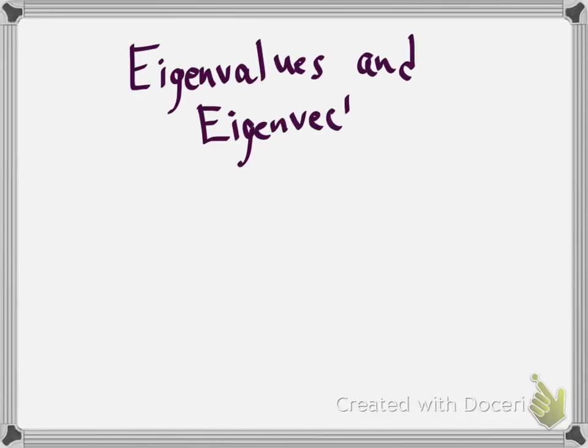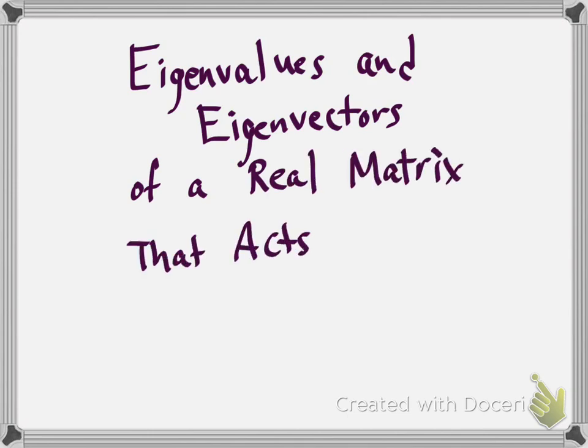Let's talk about eigenvalues and eigenvectors of real matrices acting on ℂⁿ. In this class, we're primarily interested in real 2×2 matrices acting on ℂ². We're not really looking to extend the theory of linear algebra to complex numbers. What we're trying to do is see what the complex numbers can tell us about real vector spaces.